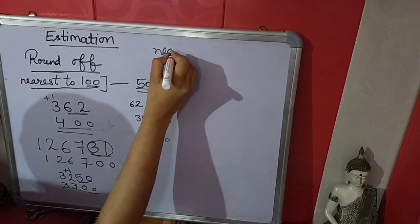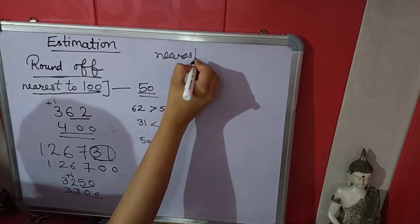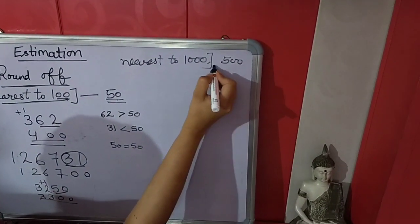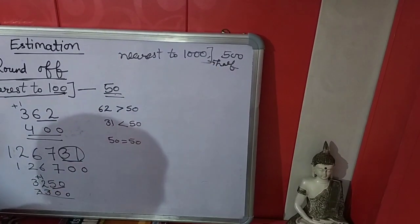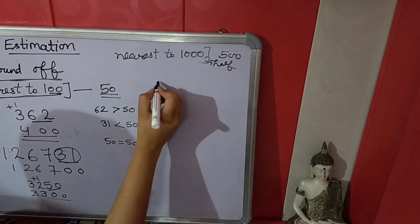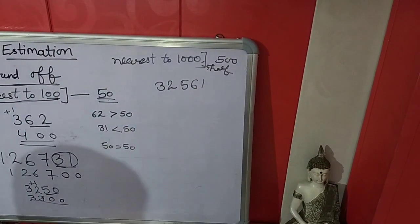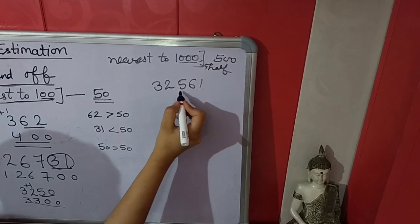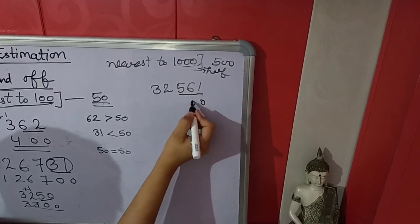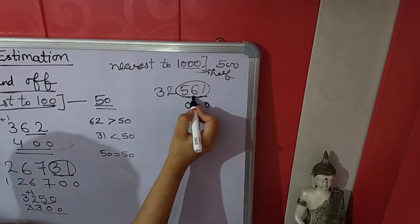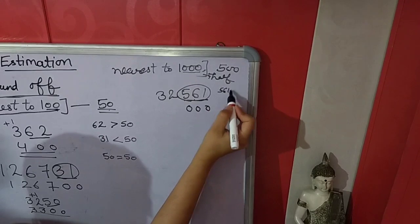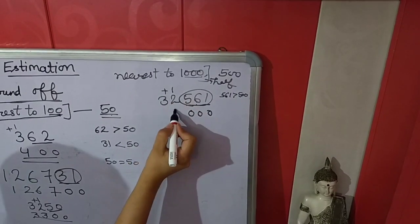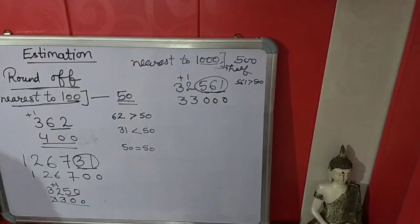Now we will estimate nearest to 1000. In 1000 we will compare to 500, because 500 is half of 1000. Take an example: we have to estimate this number nearest to 1000. In 1000 there are 3 zeros, so the last 3 numbers we convert into zeros. Now we compare this number to 500 — 561 is greater than 500. So we add 1 in the next number: 2 plus 1 equals 3, and this digit comes the same. So the answer is 33000.